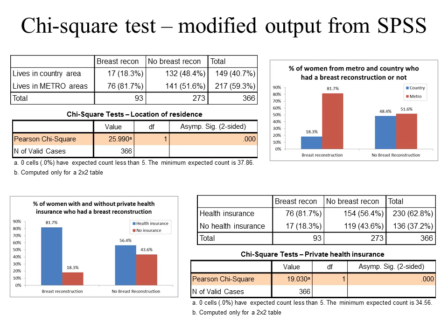Of people who had a breast reconstruction, 82% had health insurance and 18.3% did not. Compare that to people who didn't have a breast reconstruction, where 56% had health insurance and 44% did not. Overall, 62% had health insurance.